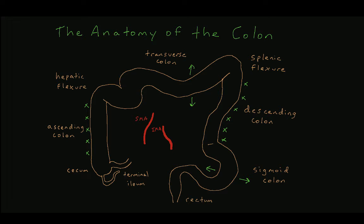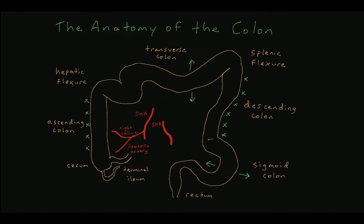Branches of the superior mesenteric artery include the ileocolic artery, which supplies blood to the terminal ileum and proximal ascending colon, the right colic artery, which supplies the ascending colon, and the middle colic artery, which supplies the transverse colon. The middle colic artery often contains a right and a left branch.